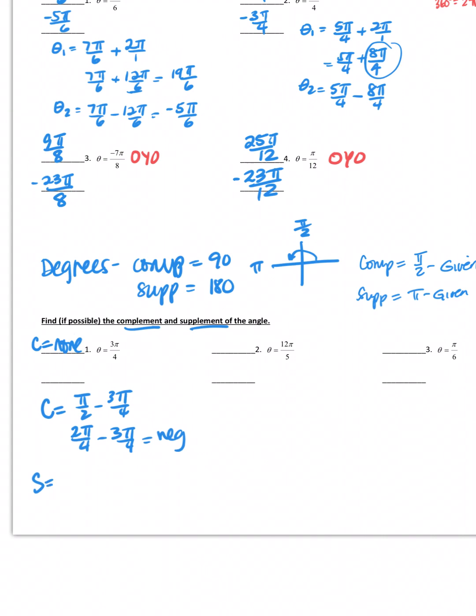For the supplement, you want to make sure you're showing me your work. Your work is really important. Don't depend on the calculator, just show the work. Supplement: pi over 1 minus 3π over 4. I know my common denominator is going to be a 4, so it's 4 over 4, subtract 3 over 4 gives me π over 4. So it does have a supplement but not a complement.